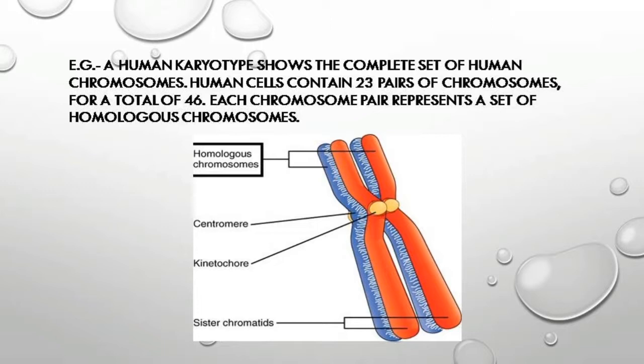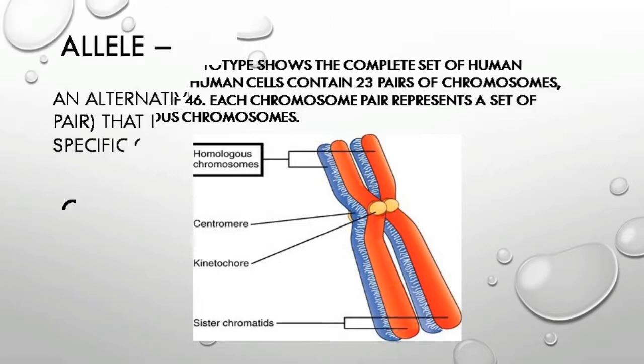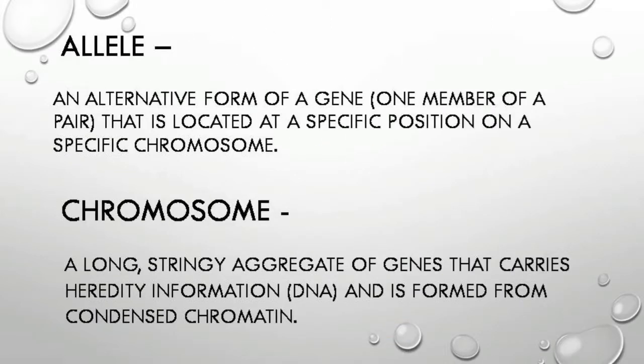Chromosomes carry genes that determine individual traits. A human karyotype shows the complete set of human chromosomes. A human cell contains 23 pairs of chromosomes for a total of 46. Each chromosome pair represents a set of homologous chromosomes.